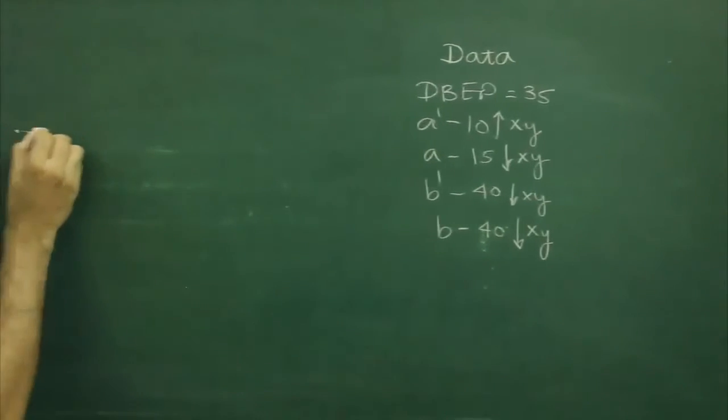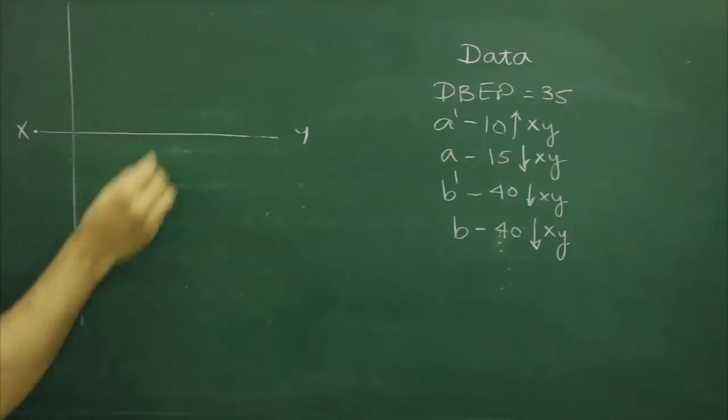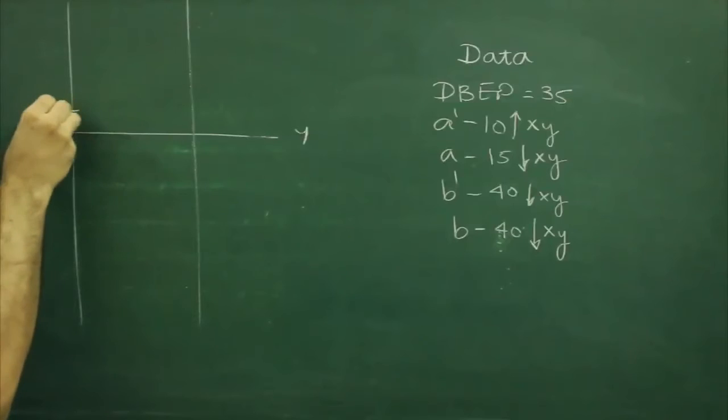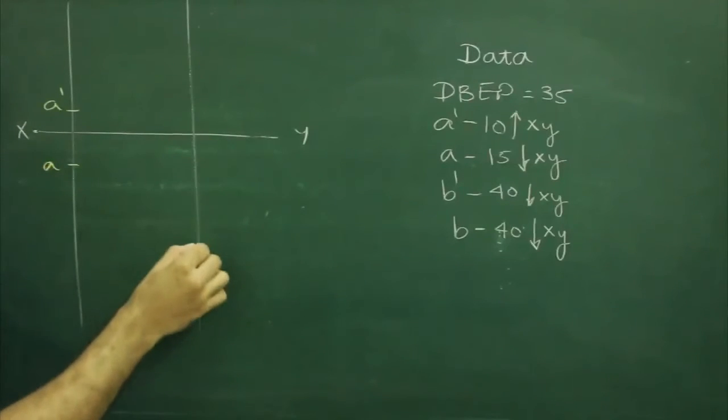So, what we will do, first we will draw xy and we will draw bb. We can map point A' and A and in this case B' and B both will be done.